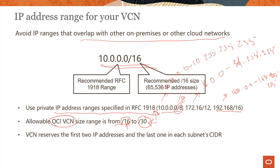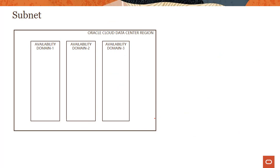Remember: as the subnet mask number becomes bigger, your network becomes smaller. Why don't we go all the way to /31? In a VCN, the first two IP addresses and the last one are reserved. In a typical network the first and last are reserved (network and broadcast), but in OCI VCN three IP addresses are reserved — that is the reason we stop at /30 networks. This is an exam question: three IP addresses are reserved in an OCI VCN.